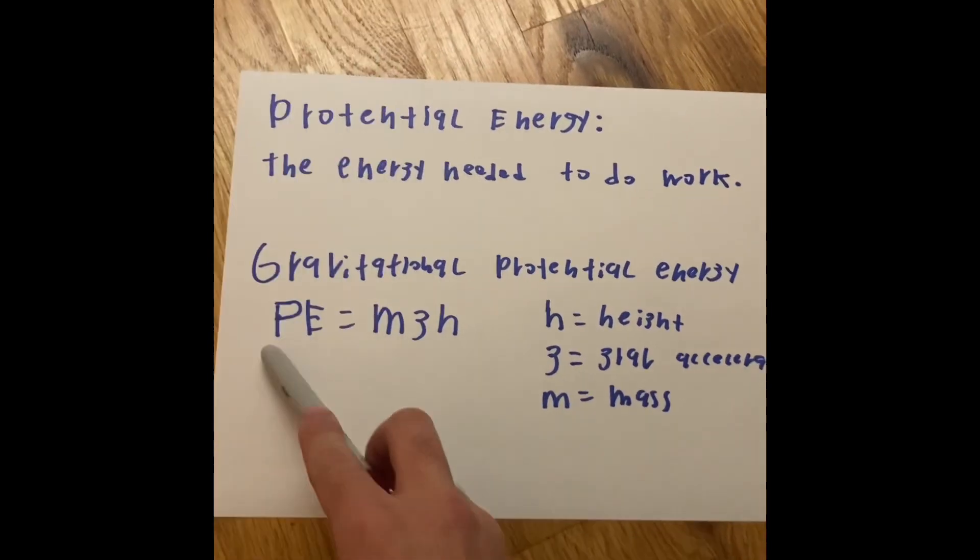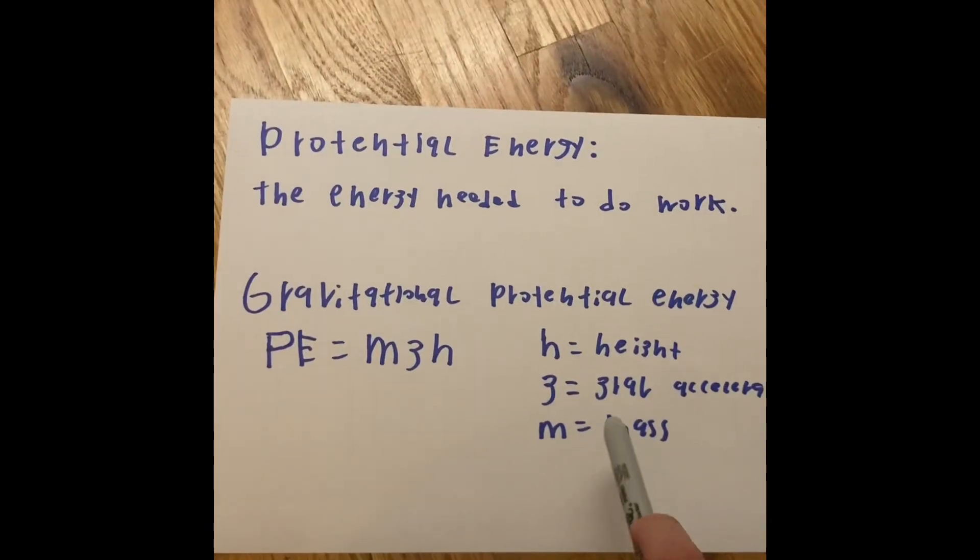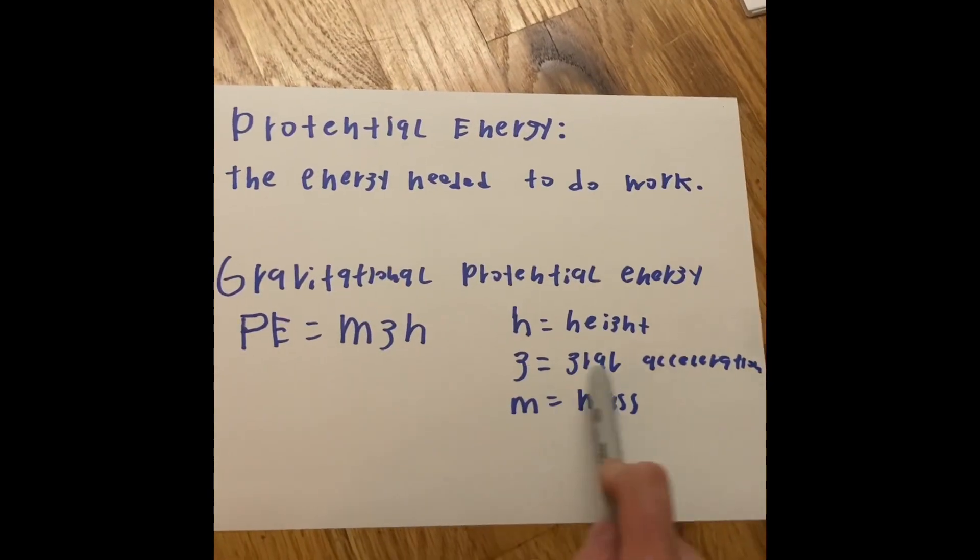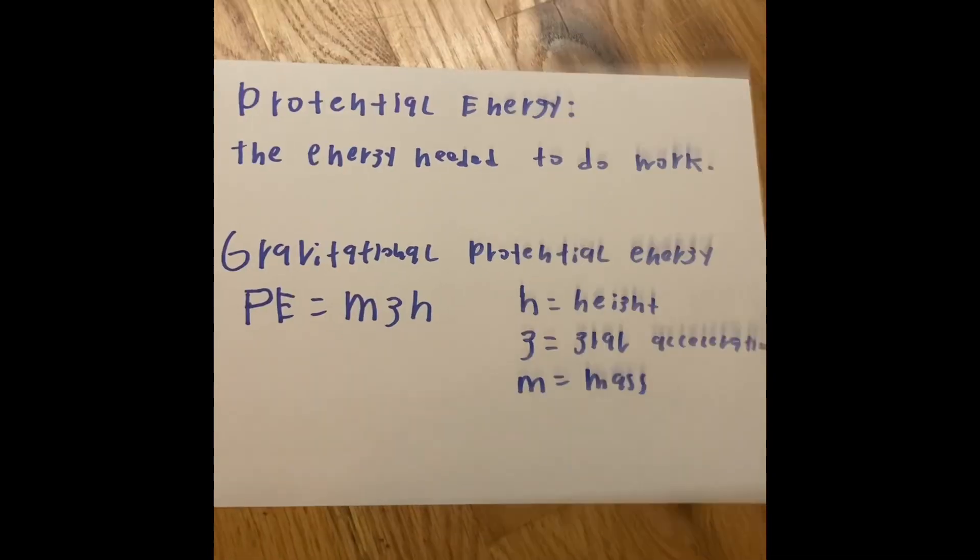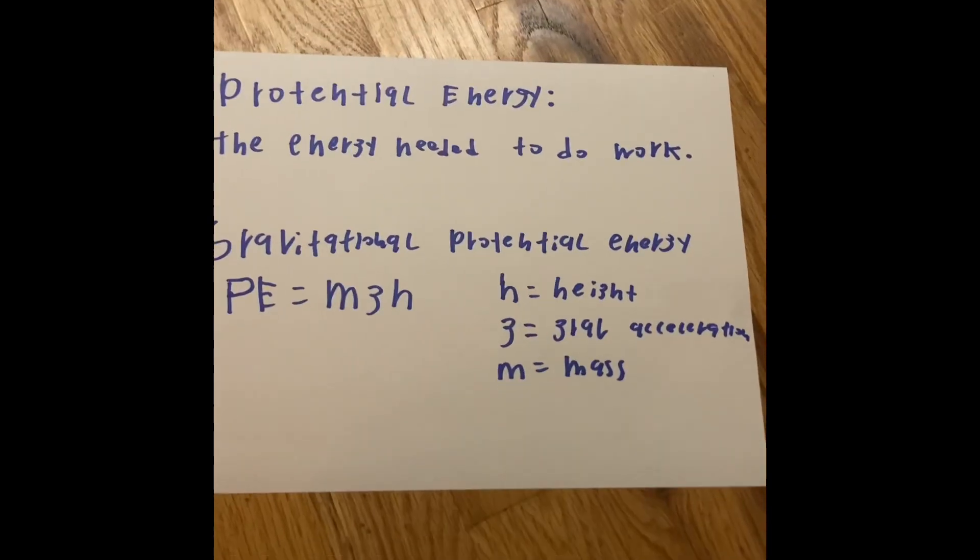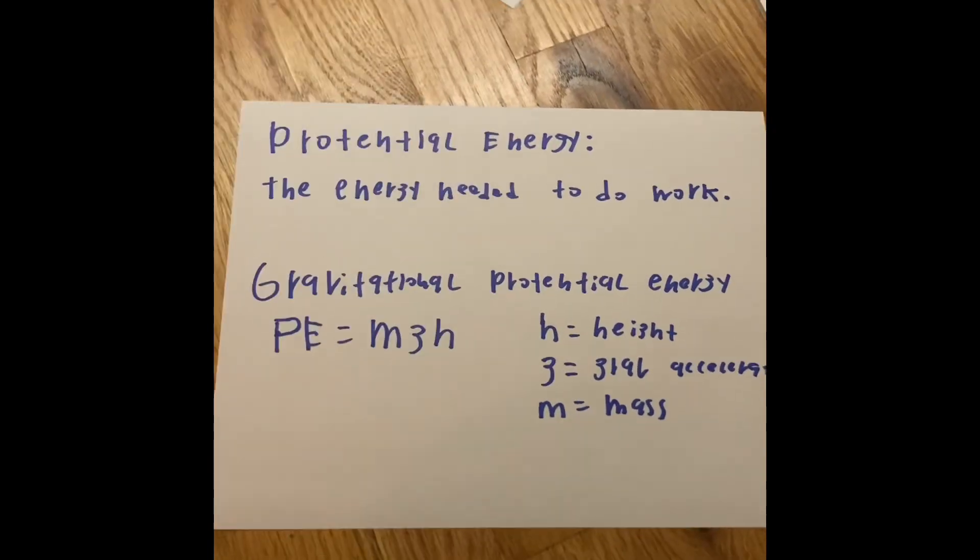So, your potential energy in the gravitational idea is the mass multiplied by the gravity of acceleration, Earth's gravity, multiplied by the height of what you're trying to do. Are you trying to climb up, climb down, lift a heavy box, or what are you trying to do with it?